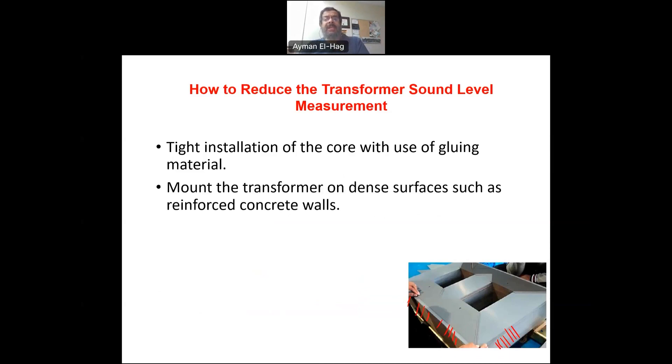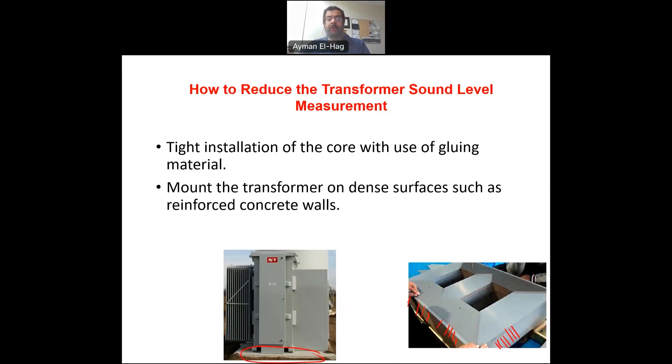Another way is when you install the transformer, you install it on a dense surface like a reinforced concrete wall like this one here. Now when you install the transformer on such a dense surface it will absorb part of this noise and it will not be amplified. Also you can use some acoustical damping material in the transformer, inside the transformer, outside the transformer so that it can absorb and minimize the level of noise. So these are some basic information about the transformer sound level. It comes from where, how we measure it, and finally how we can minimize it.